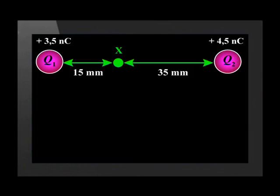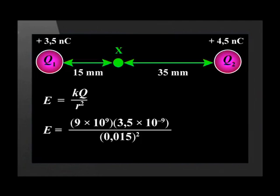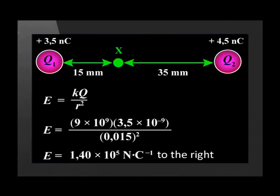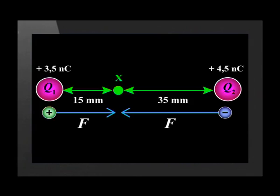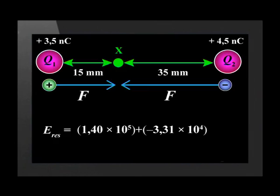To find the electric field strength at X due to Q1, we use E equals K Q over R squared. Substituting in the values for Q1, the electric field strength works out to be 1.4 times 10 to the 5 newtons per coulomb, away from Q1, that is, to the right in the diagram. Similarly, the electric field strength at X due to Q2 is 3.31 times 10 to the 4 newtons per coulomb, to the left. Taking right as positive and left as negative, the resultant is 1.40 times 10 to the 5 plus negative 3.31 times 10 to the 4, giving 1.07 times 10 to the 5 newtons per coulomb. The positive answer indicates that the field direction is towards Q2.